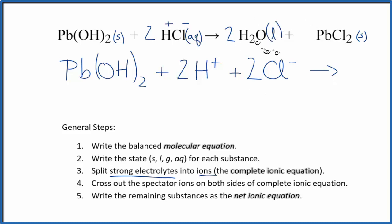On the product side, we don't split liquids apart either. So solids, liquids, and gases—we don't split those apart in net ionic equations. So I have two H₂O here, plus another solid, which we won't split apart. So we'll put PbCl₂. This is considered the total ionic equation, or the complete ionic equation.